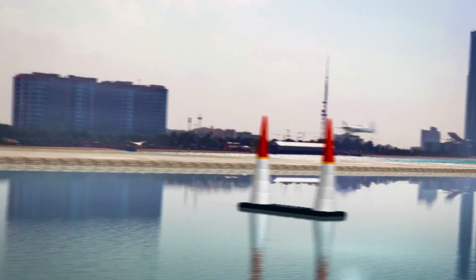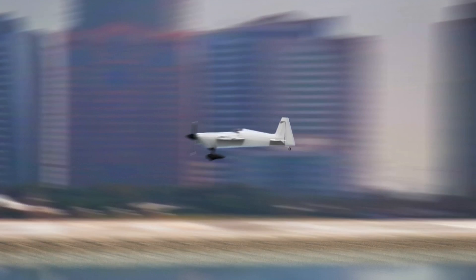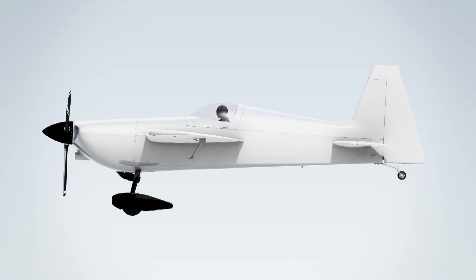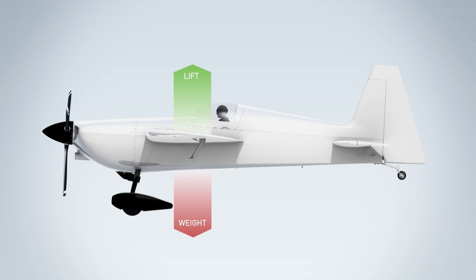CG stands for center of gravity, and it is the point at which the aircraft would balance fore and aft. The forces at work on the aircraft with regard to balance are the lift produced from the wing, and the weight of the aircraft, which is centered at the CG point.